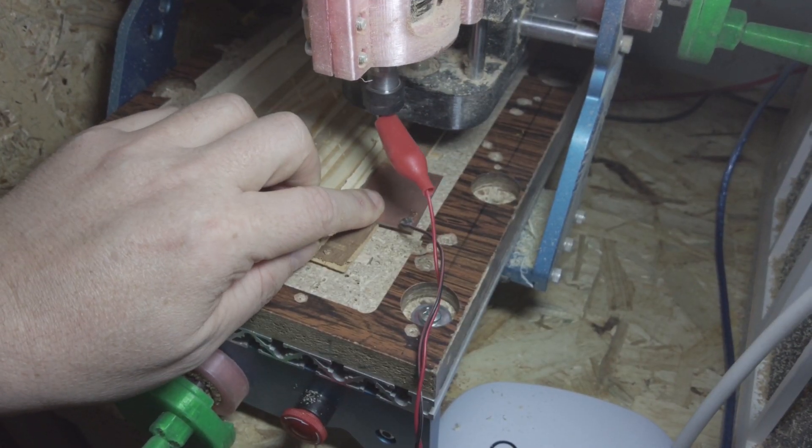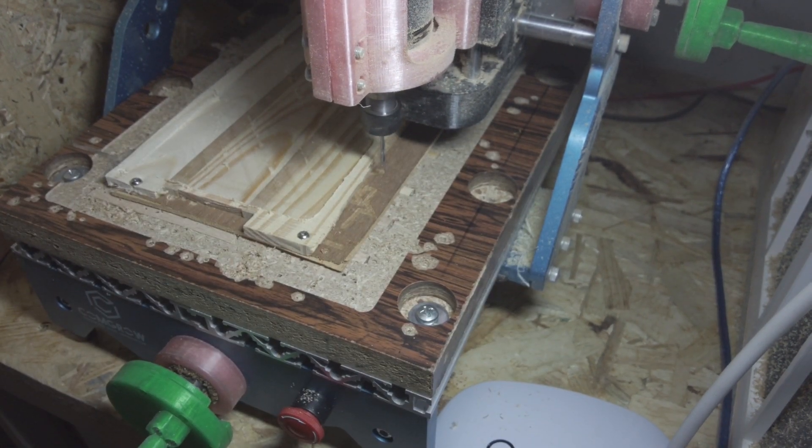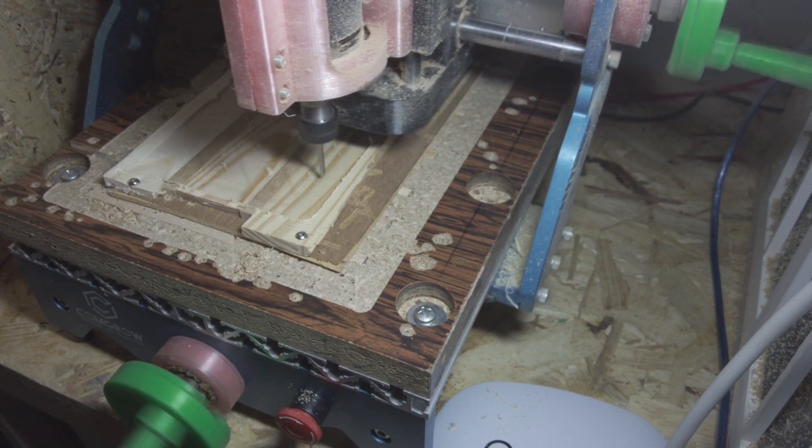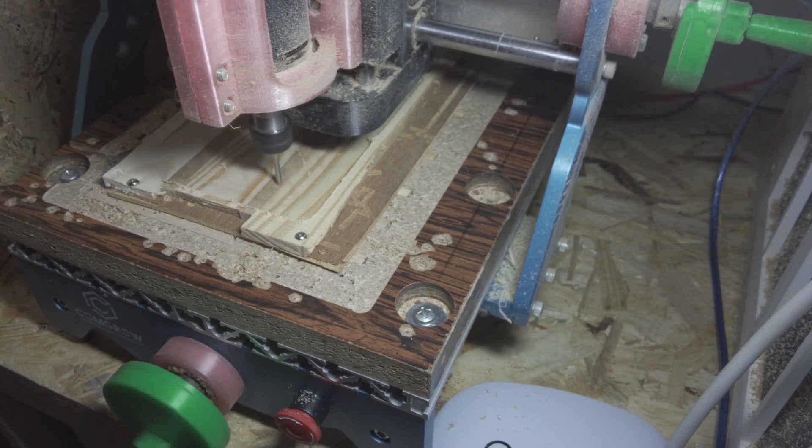For the milling of the components I use a double edged upcut end mill. I choose the zero point in z direction on the bottom of the workpiece. And then I let the milling machine do its work.